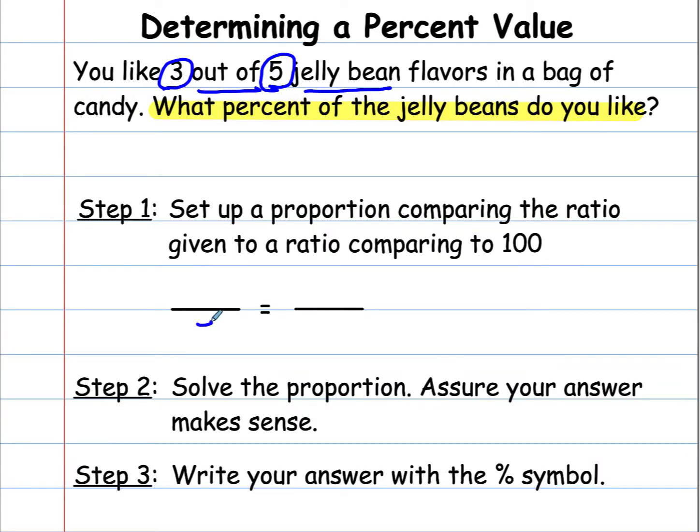So five represents everything in the bag and 100% represents everything in the bag. Well, we have exactly three out of every five that we like. So we want to know what does that represent out of 100. So we're solving for this missing part, and I'm going to let P equal the percent.